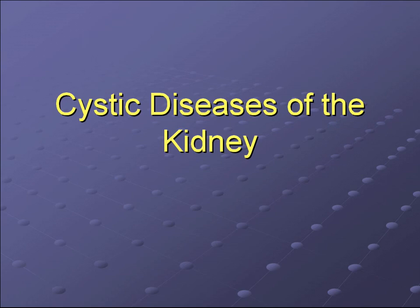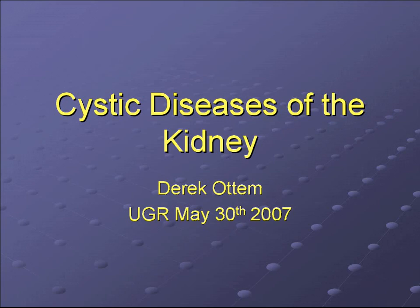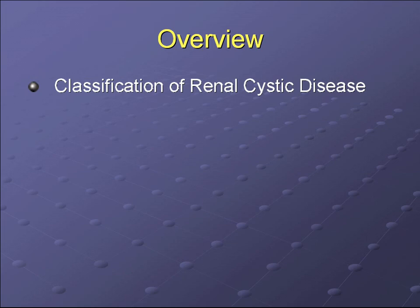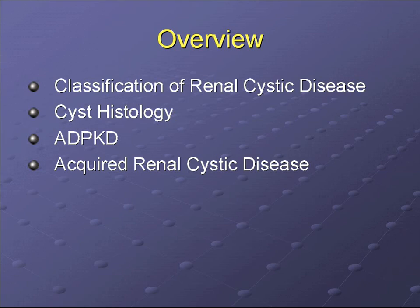Today we're going to talk about cystic diseases of the kidney, but mainly we're going to focus on polycystic kidney disease and acquired renal cystic disease. We'll start with briefly going over the classification of renal cystic diseases, talk a little bit about cyst histology, and then talk about polycystic kidney disease and acquired renal cystic disease.